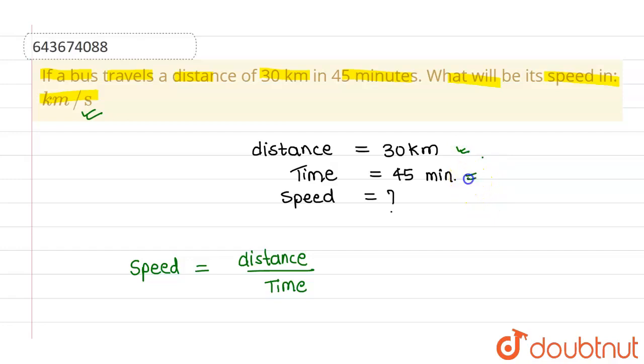If I put distance - this is 30 kilometers divided by time - this will be 45 into 60 seconds. This will cancel out: this by 1, this by 2.